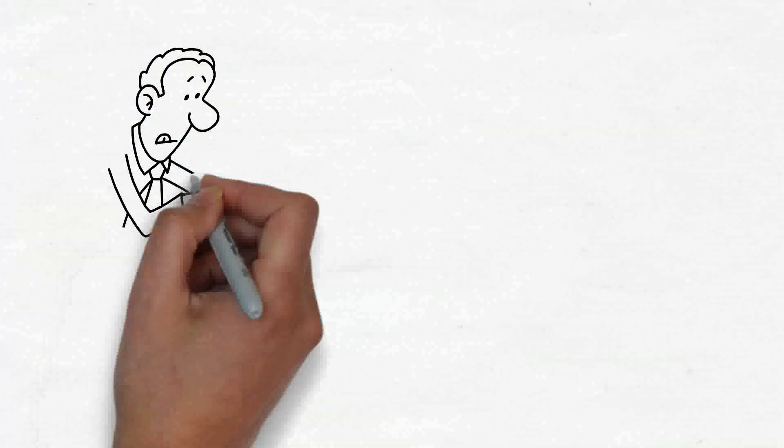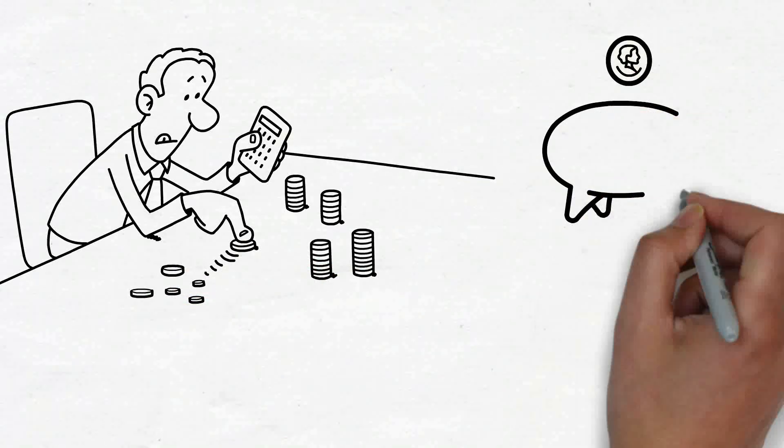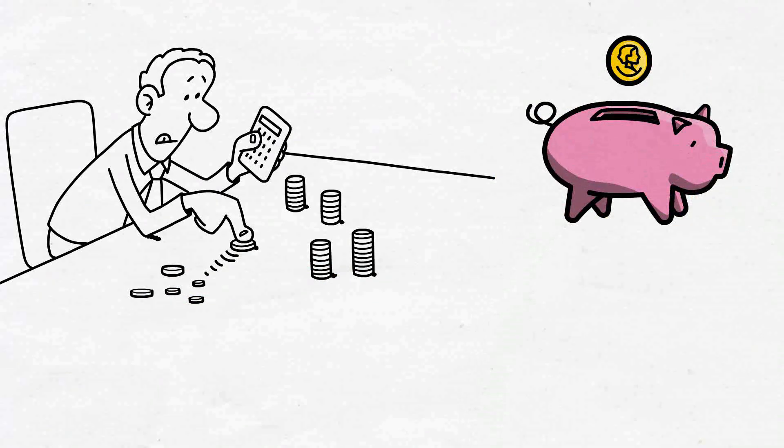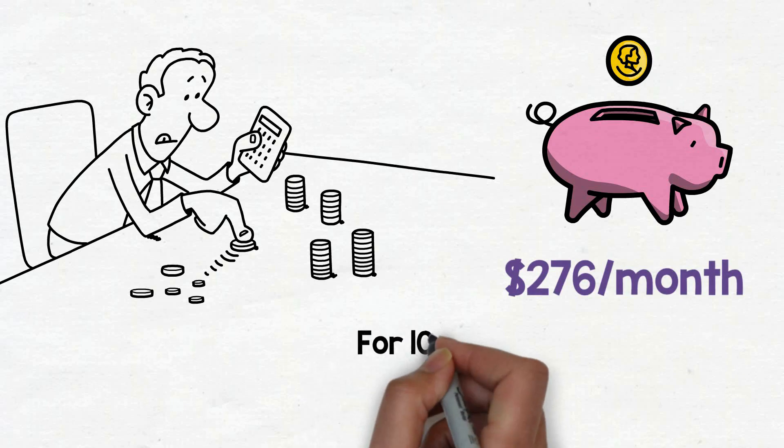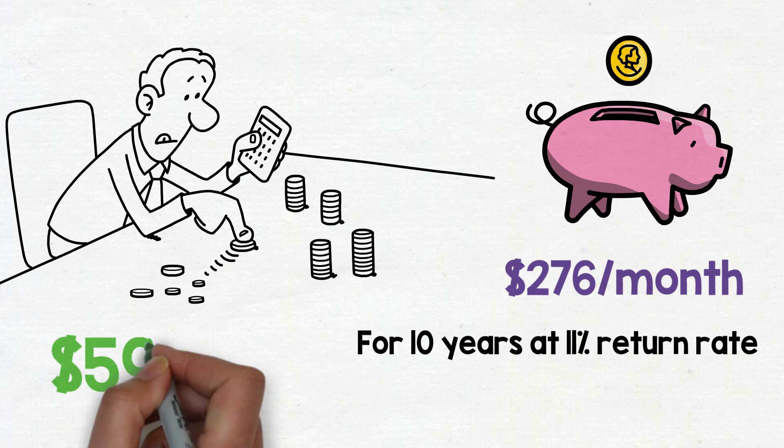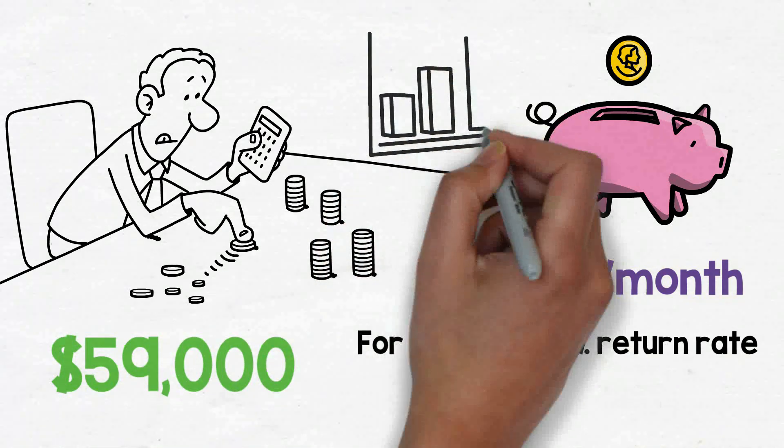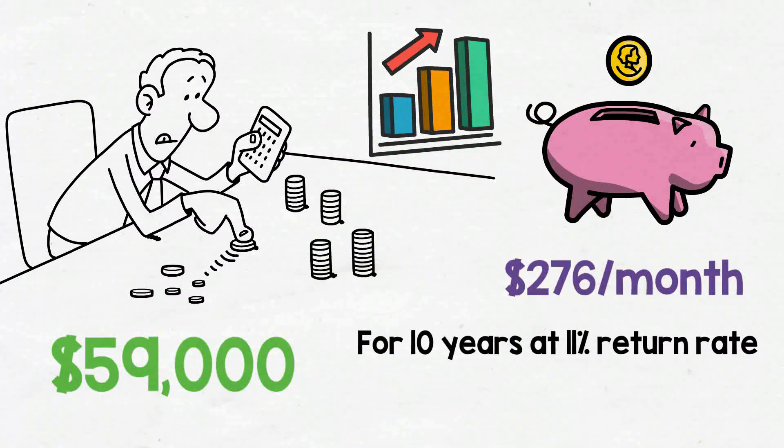Ouch! Those figures need to be entered into our retirement calculator. And hear this: if you made an investment of $276 every month for 10 years at an average yearly return of 11%, you would have more than $59,000. Nothing puts things into perspective like the wonder of compound growth.